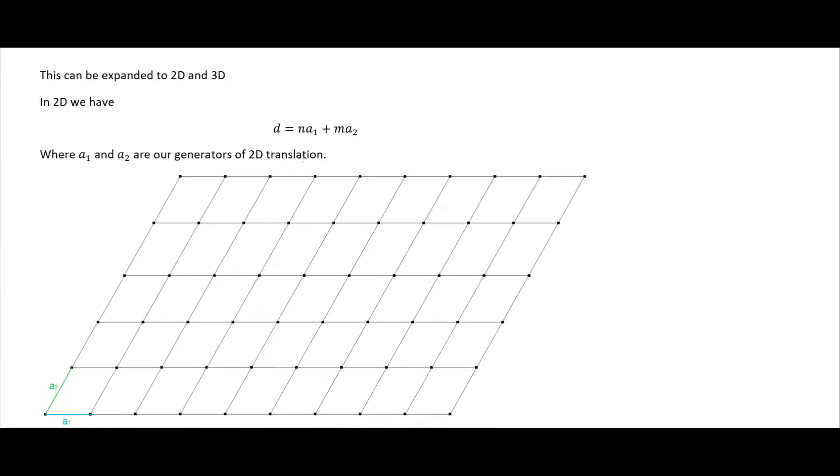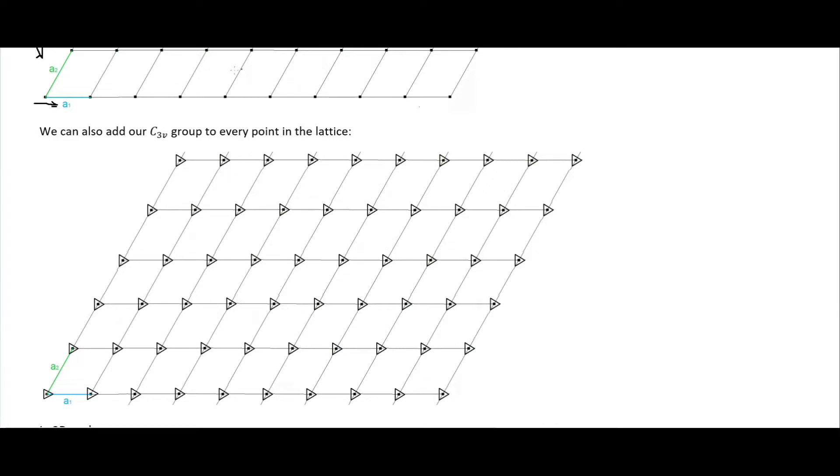We extend this into two dimensions and three dimensions. In two dimensions we just have two different of these a's here, and they don't have to be the same size. As I show in this figure here they also don't have to be perpendicular to each other. We could have our a2 be oblique to our a1, and in fact if you do crystallography this is going to be much more common than finding nice square unit cells here for your space group. We could then add our point groups, our symmetry C3v here to every point in the lattice. I've put a triangle at every point in the lattice so you could perform all your C3v operations on every point.